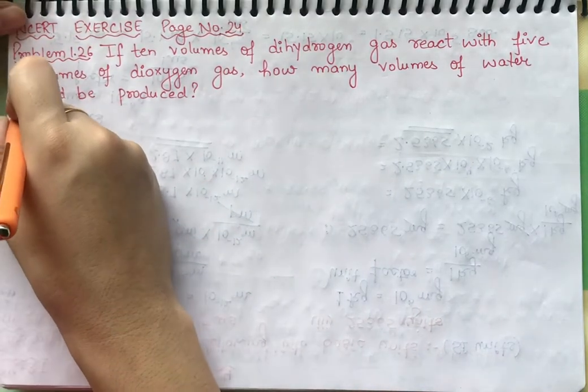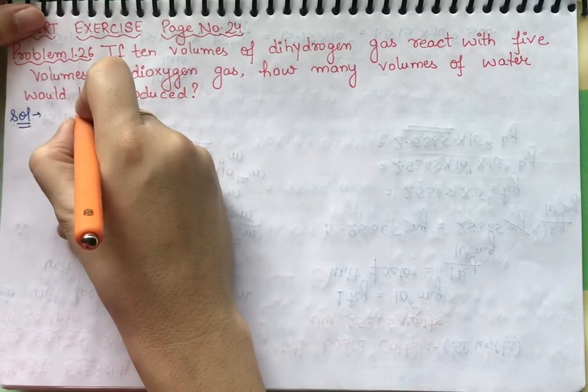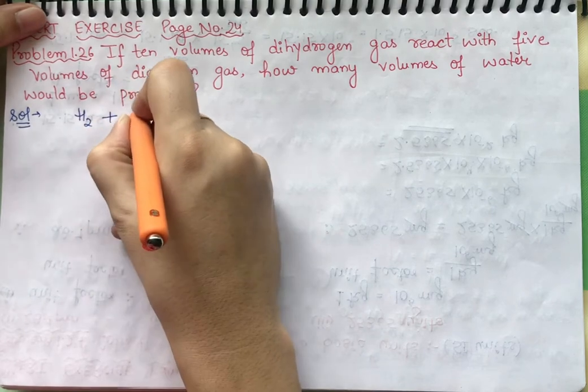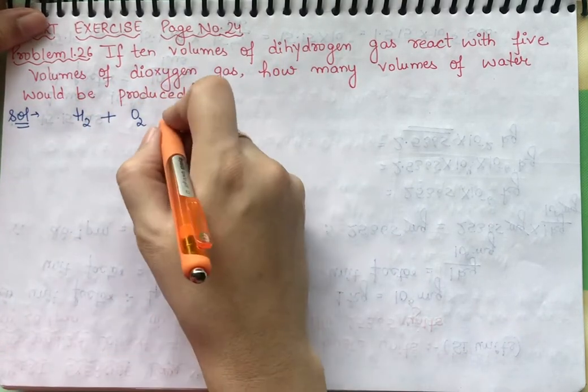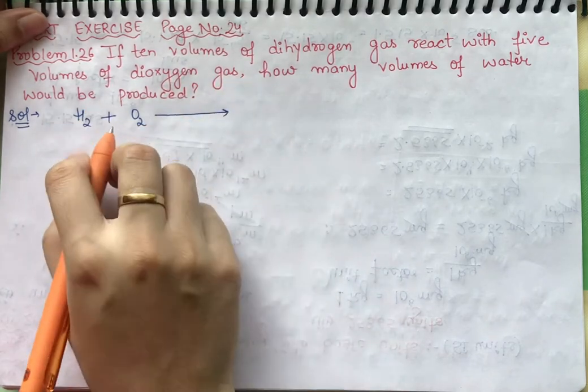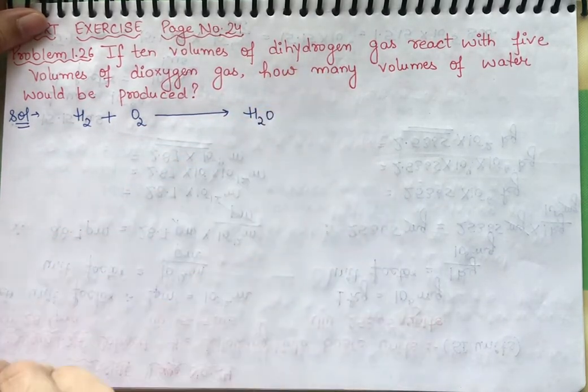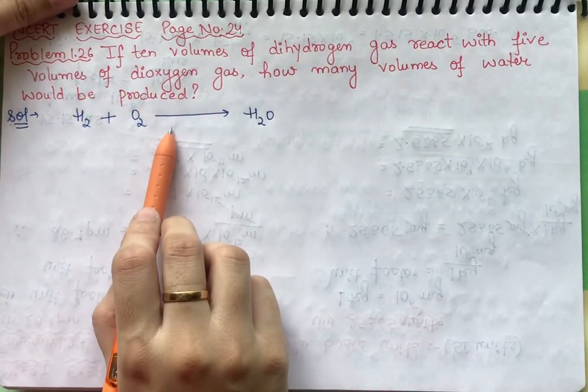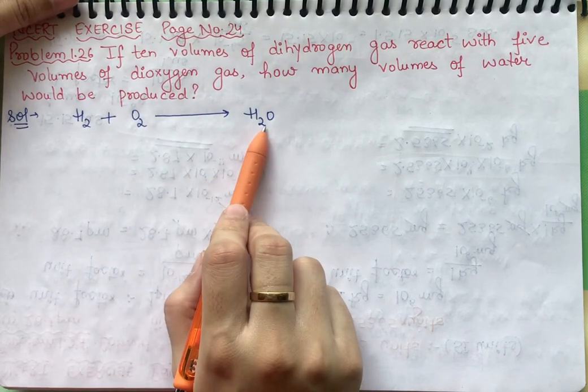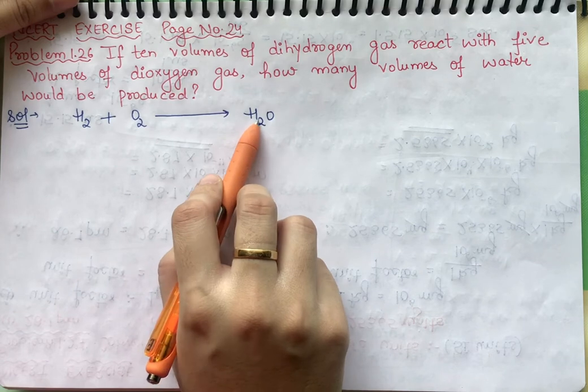First we have a reaction. We have hydrogen plus oxygen. Dihydrogen means that there are two hydrogen atoms present. Hydrogen and oxygen react together. What do they do? They make water. Dihydrogen reacts with dioxygen, so what does it form? Water forms.